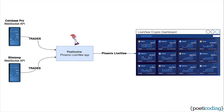Let's see the application's architecture. We're going to build a Phoenix Live View app called Poetic Coins, which receives real-time trades from multiple cryptocurrency exchanges. With Live View, it displays prices and other data on an interactive dashboard. Since the dashboard just shows the most recent data, we don't need any database. We'll see how to use Elixir processes to keep all we need in memory.